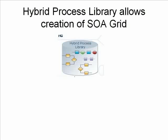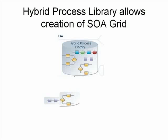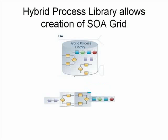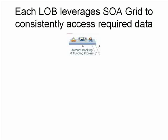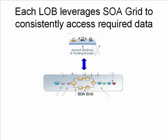We have this hybrid process library, and what that allows us to do is reassemble different pieces to create what we need. The first thing we do is take the different pieces and rearrange them. What we end up with is a standard set of processes — in this case, it's the SOA grid. That's why the process library is so important, because it allows us to create that grid. The grid standardizes the process of everything that passes through it, and that's used by each line of business.